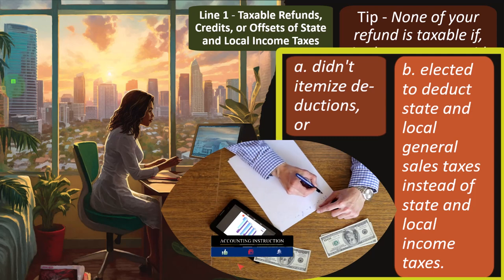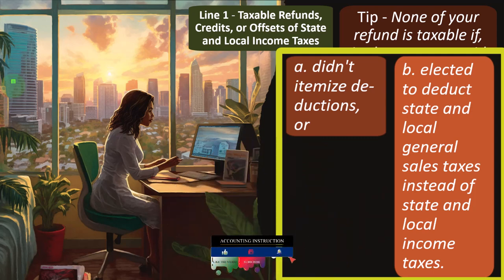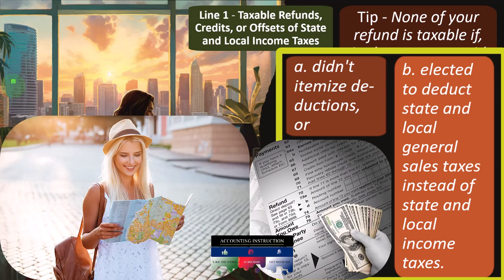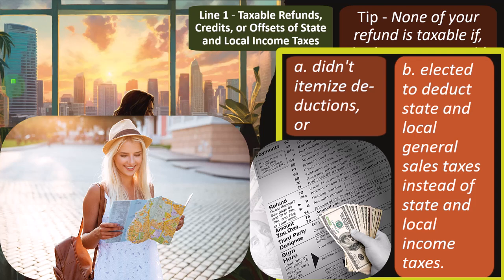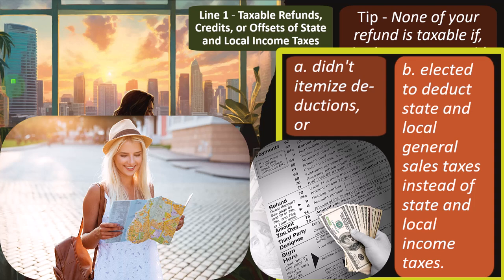But when you get to state taxes, it gets more complex because it's possible you might be able to deduct state taxes on federal income taxes as an itemized deduction. If you allow a deduction for state taxes for federal purposes, there would be an incentive to overpay your state taxes. Then when you get a refund in the following year, if you don't have to include it in income, that would be a kind of loophole — you could deduct more in the year you paid it and not include the refund as income in the following year. So that's the problem.